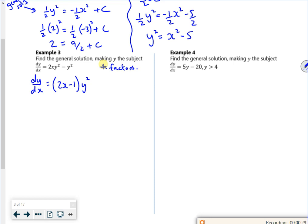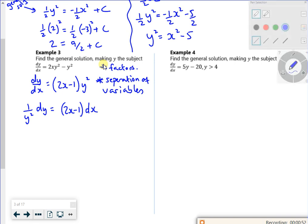Now I can divide through by y squared. So now I'm going to do the separation of variables. All I'm doing is y on the left, x on the right. So I've got 1 over y squared dy is 2x minus 1 dx. And then I'm going to stick an integration sign in front of it.